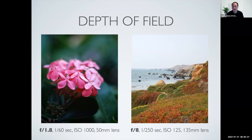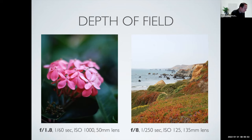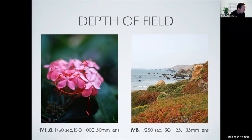Here's an example side by side of depth of field. On the left I have an F1.8, which is a very large aperture with a lot of light coming in. Very, very little of the actual flower petal is in focus — just right in that one plane. Everything beyond that plane is blurry going toward the back of the photo, and everything coming toward us in the front is also blurry. That is a good example of using depth of field.